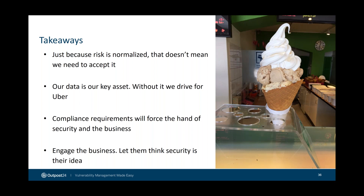Our data is our key asset. Without it, there is no business. We need to make sure that data is protected, both from our users and from other people who have bad ideas of what they'd like to do with it. And we have no option — compliance requirements, whether it's GDPR, PCI, or Sarbanes-Oxley, will force your hand. If you fail, it will cost money. It's not an option of 'maybe we can secure that' — it's a case of we need to secure it. When can we work with the business to make sure that's done?